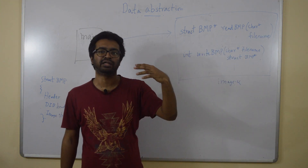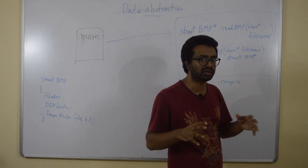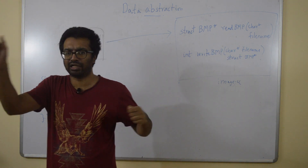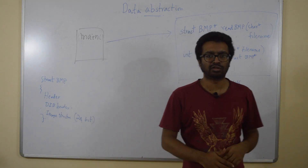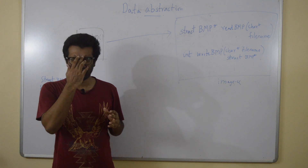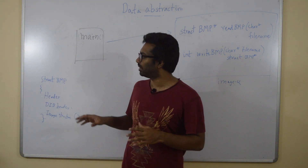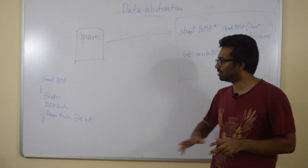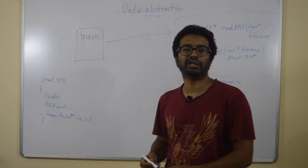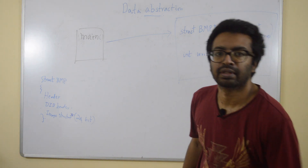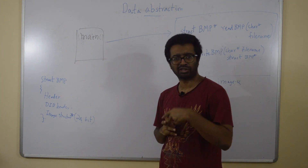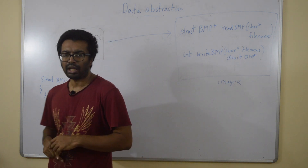Each RGB value takes 8 bits, so RGB together takes 24 bits. One pixel takes 24 bits, and if the image is 100 by 100 pixels, the total size will be 100 × 100 × 24 bits allocated for the image structure. So this struct BMP has a pointer to an image structure where one image structure is 24 bits, or 3 bytes.